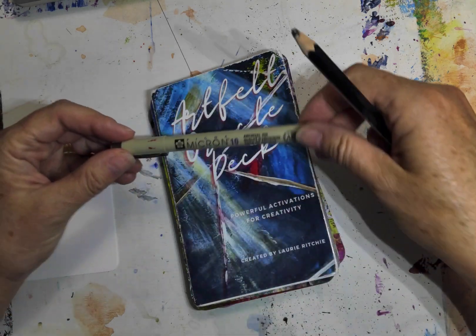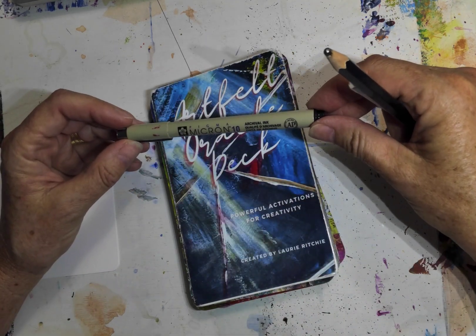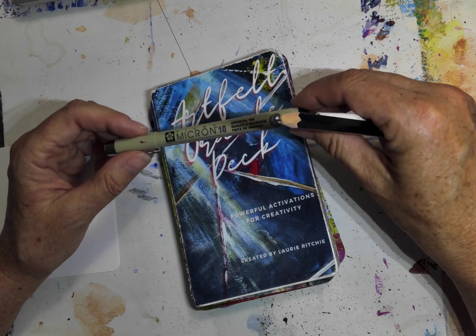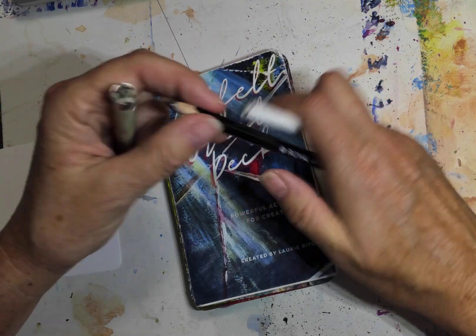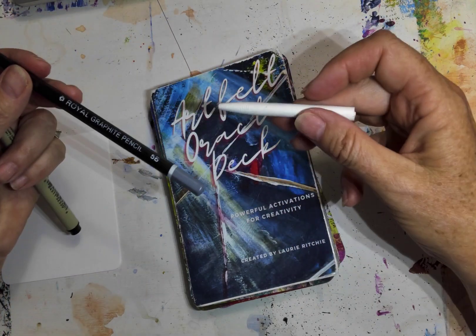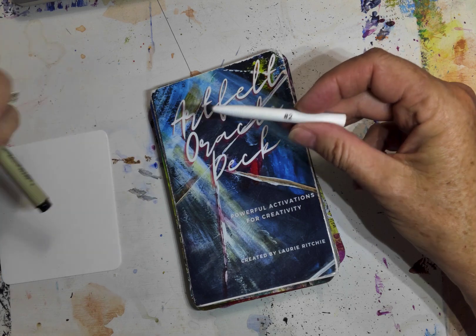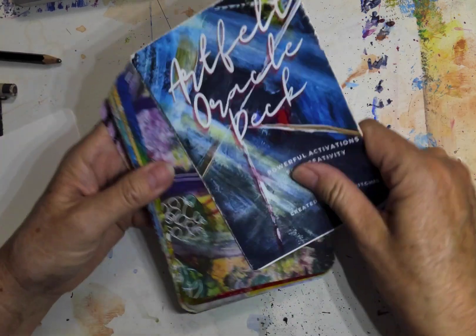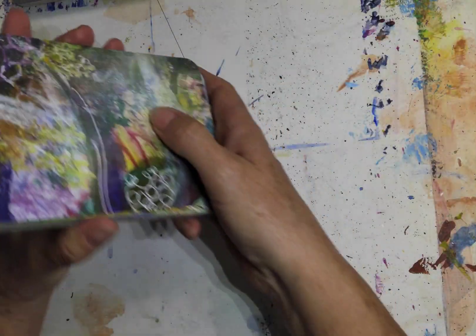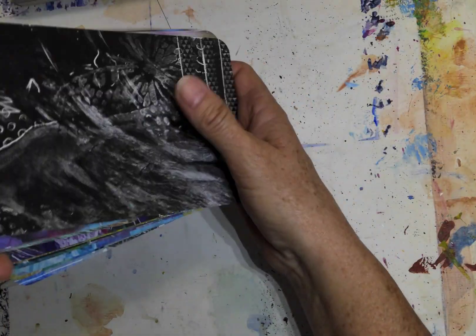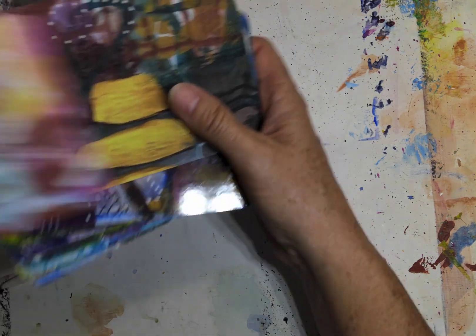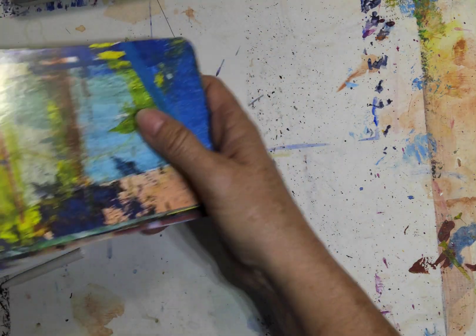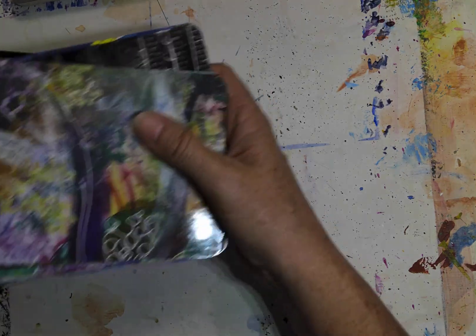And I have a Micron 10, which is kind of a heavier nib today, but you can use any kind of pen and a pencil. I have a graphite pencil and a blending tool. So here we go. We always start with a random draw from my cards to give us a little something to ponder as we create.